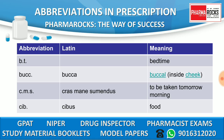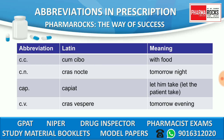BT means bedtime. BUCC means 'bucca,' meaning buccal — inside the cheek. CMS means 'cras mane sumendus,' meaning to be taken tomorrow morning. CIB means 'cibus,' meaning food. CC means 'com cibo,' meaning with food.